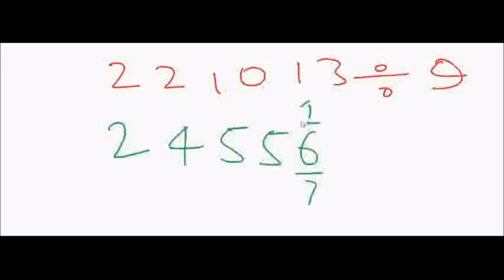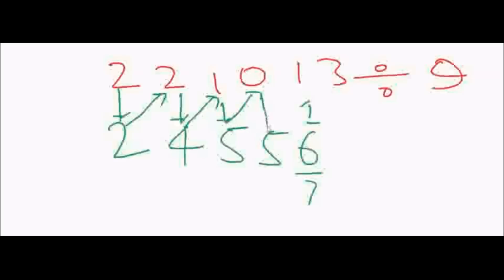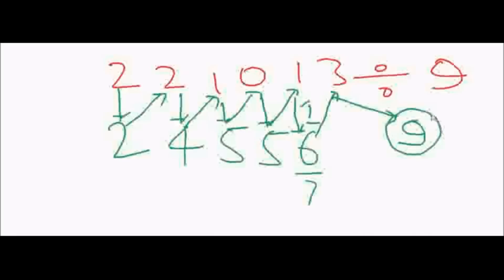First of all, you write this particular number as it is here, which is 2. Then add this number to the second number of the question, that is 2, so 2 plus 2 is 4. Then again do the same thing: 4 plus 1 is 5, and 5 plus 0 is again 5, 5 plus 1 is 6, and 6 plus 3 is 9. But since we are getting 9 as a remainder, and 9 can be divided by 9 one time, so I add 1 here as a carry.